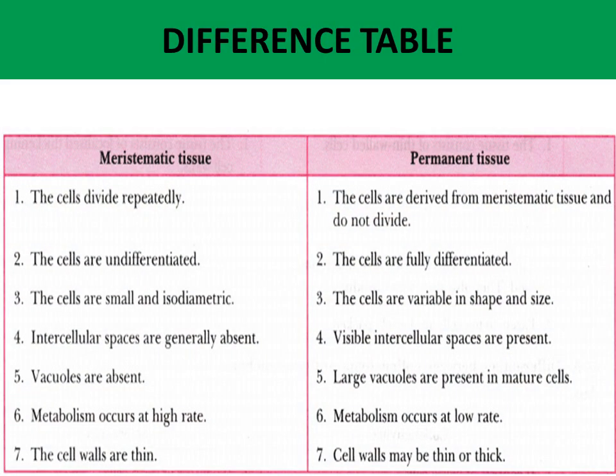Now the difference table between meristematic tissue and permanent tissue. Difference one: in meristematic tissue the cells divide repeatedly; in permanent tissue the cells are derived from meristematic tissue and do not divide. Difference two: in meristematic tissue the cells are undifferentiated; in permanent tissue the cells are fully differentiated.